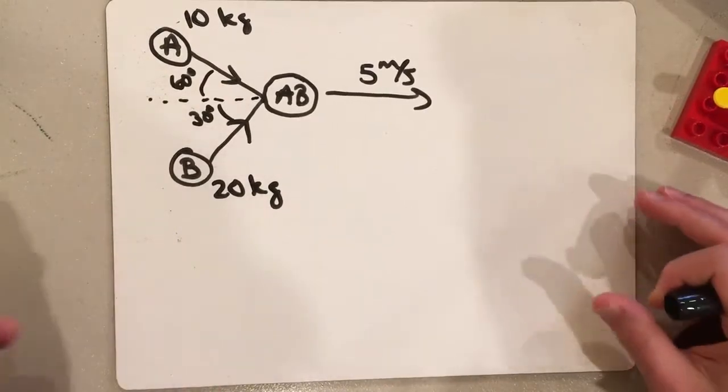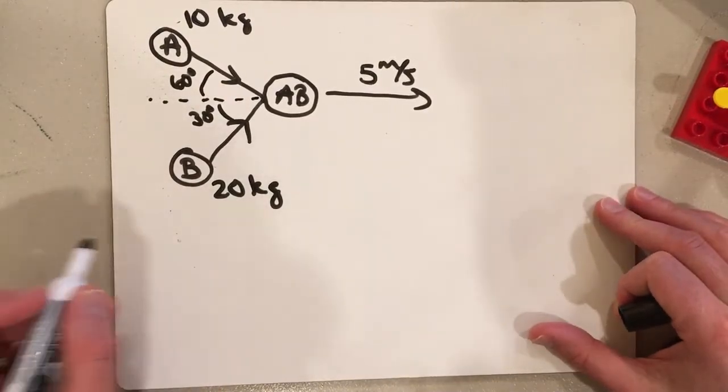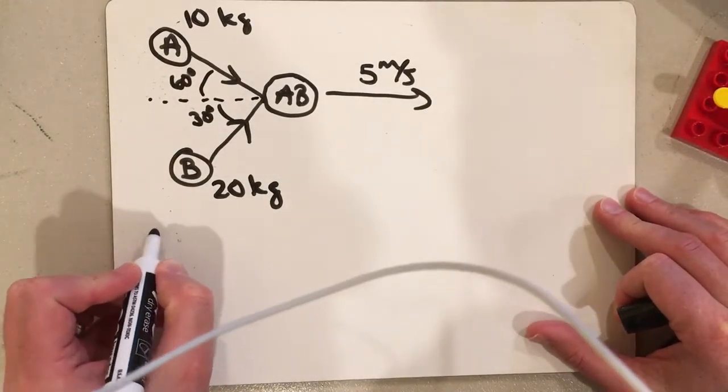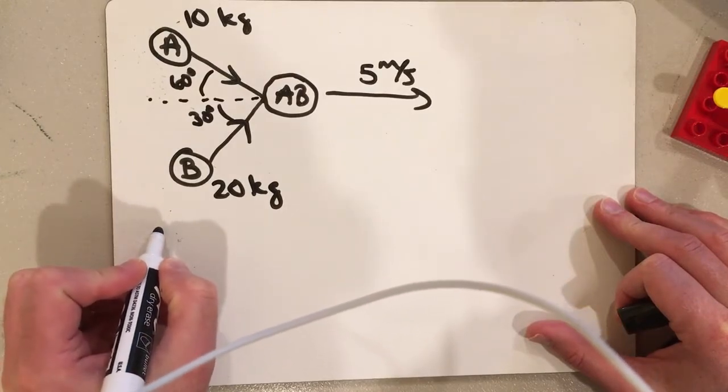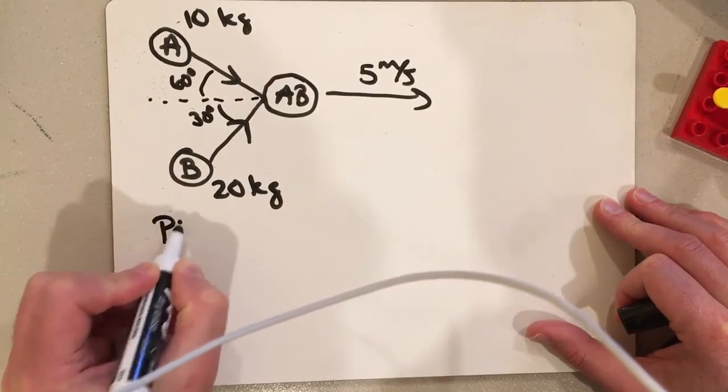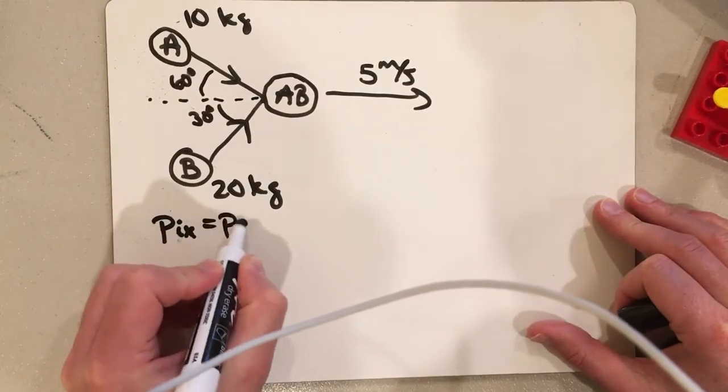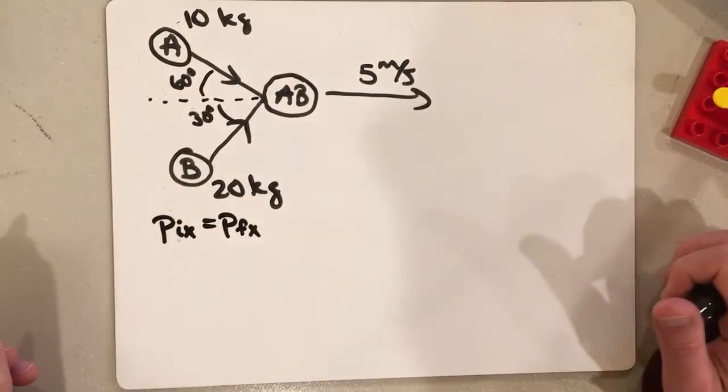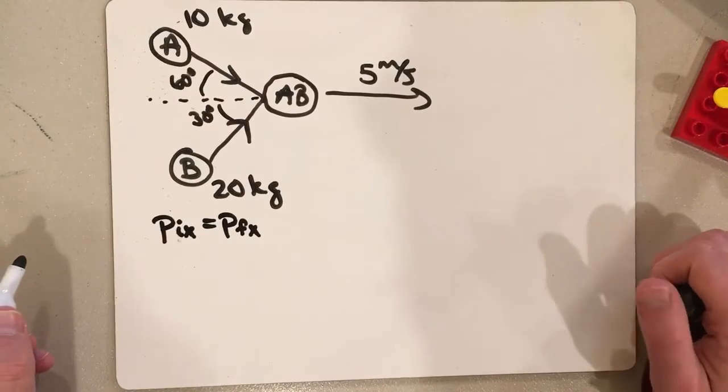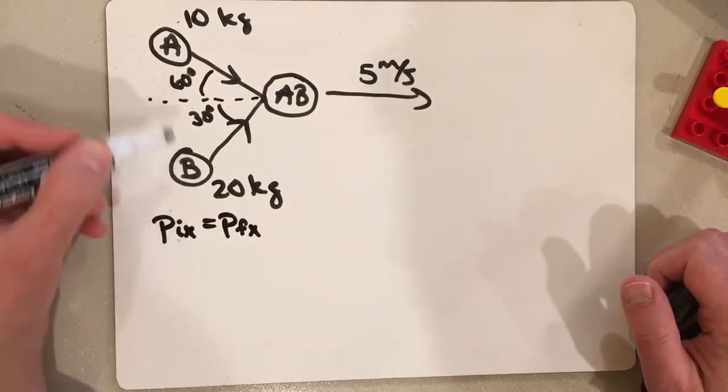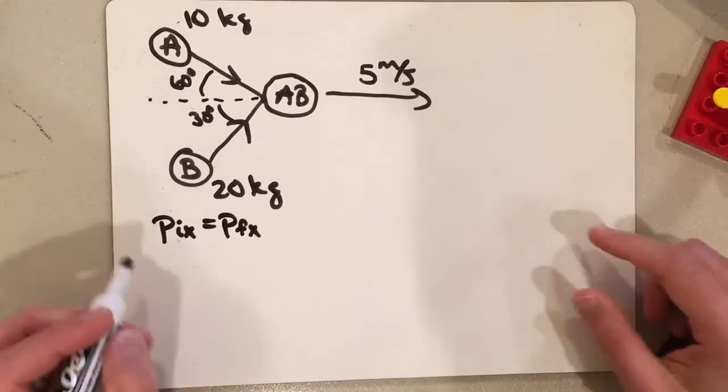So in this case, if I start with the X, that's telling me that I've got the total initial momentum in the X has to equal the total final momentum in the X. And initially, I have two objects that have some X momentum, A and B.